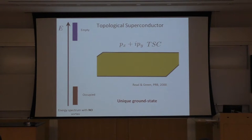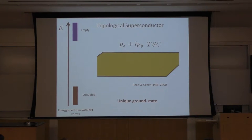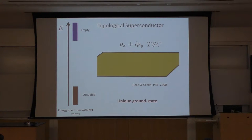Now let's focus on a special kind of superconductor in 2D — the p+ip superconductor. I will not talk much about what p+ip means, but if we find the spectrum of the system, we get two bands with a non-zero gap between them. Negative energy states are fully occupied because the chemical potential for superconductors is zero, and higher states are empty. In some sense it's like an insulator, and the ground state is unique because I have to occupy every state — there is no degree of freedom left.